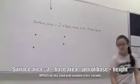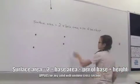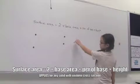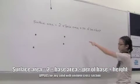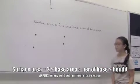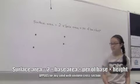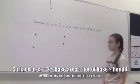Earlier on, we said that surface area equals two times the base area plus the perimeter of the base times the height. This formula works for any solid with a uniform cross-section.